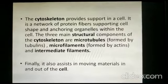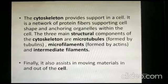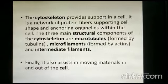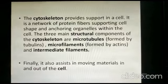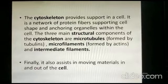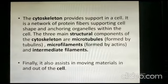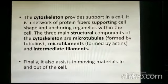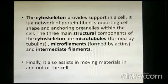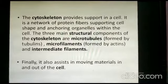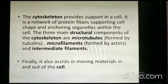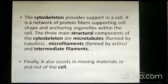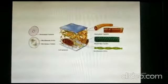The three main structural components of the cytoskeleton are microtubules formed by tubulins, microfilaments formed by actins, and intermediate filaments. It also assists in moving materials in and out of the cell.